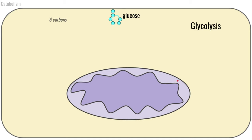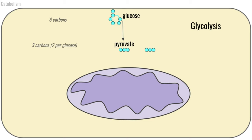I'd like you to follow along in these images by tracking the number of carbons. We see that we're starting off with glucose — each of these little teal balls is representing one carbon. So we're going to start off with glucose, a six-carbon monosaccharide. Glucose is going to go through a series of reactions in order to become pyruvate, a three-carbon compound. Specifically, one glucose molecule is ultimately going to yield two pyruvates, two of these three-carbon compounds.